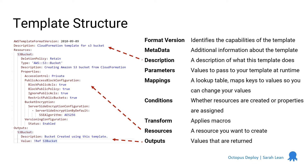The last section is outputs, and this is also an optional part. It allows you to return some values once the template has been created. In this example, I'm outputting the name of the S3 bucket that will be created, because I'm not in control within my template of what the name will be. So I want to have that back so I can take note of it — potentially to use in another template deployment or something else happening within my deployment.